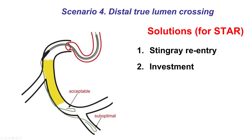Finally, there is the option of the guide wire entering the distal true lumen. However, if that happens very distally, this is not optimal because of high restenosis rates. If it happens very close to the distal cap without affecting any major branch, then it is fine.